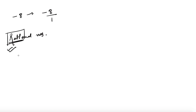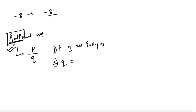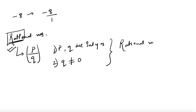Mathematically, rational numbers are defined as any number in the form of p by q, where p and q are integers and q is not equal to zero. Such numbers are known as rational numbers. Why should q not equal zero? Because any number divided by zero is not defined. So we eliminate such cases, and apart from that, everything that can be expressed in this form comes under the category of rational numbers.